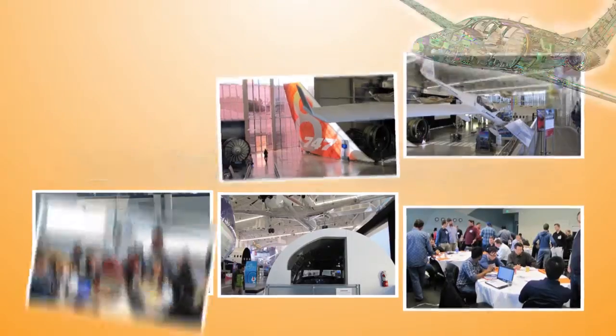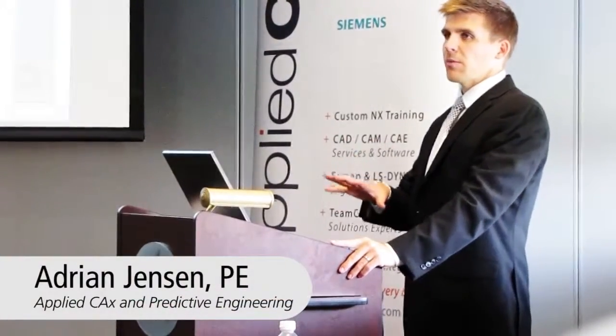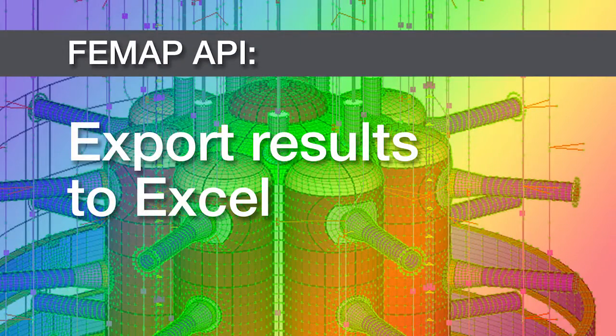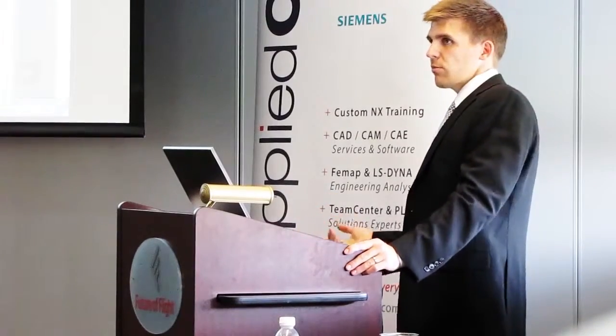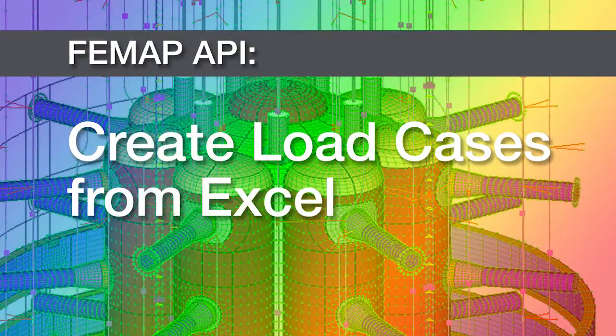The big one is importing and exporting data. If you're working with lots and lots of information and you want to automate the process of exporting that to Excel, there are API programs where you can just pick your nodes, pick your elements, pick your output vectors, and push all of that stress data to Excel. Or the opposite way — if you've got a massive spreadsheet of loads, forces in each direction and moments for a handful of nodes, entering those into the model by hand is not only painful, it takes a long time and it's a big opportunity for user error. So you automate the process with an API.